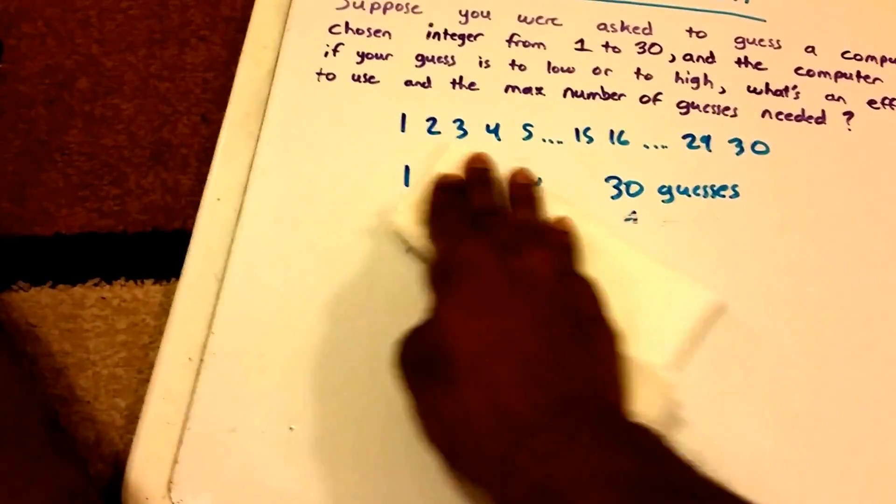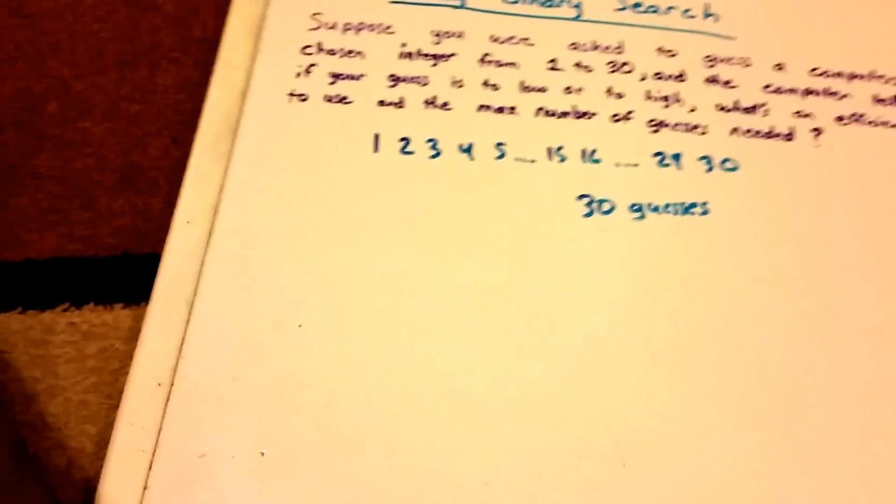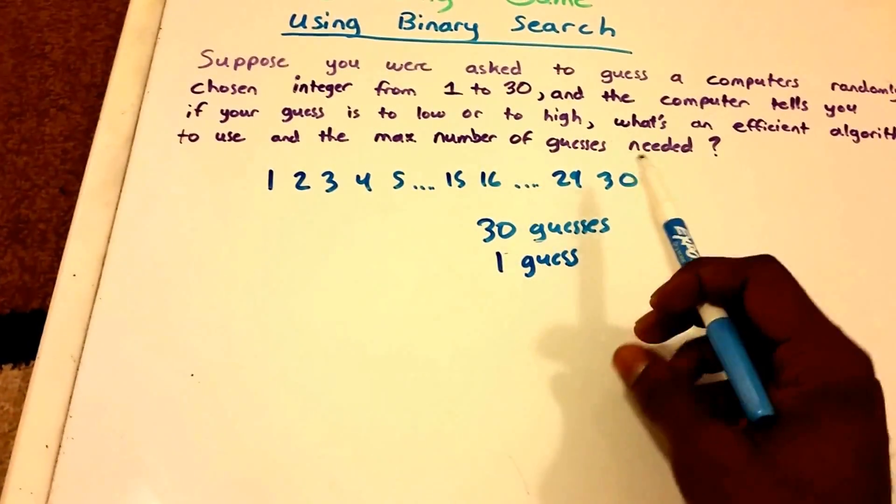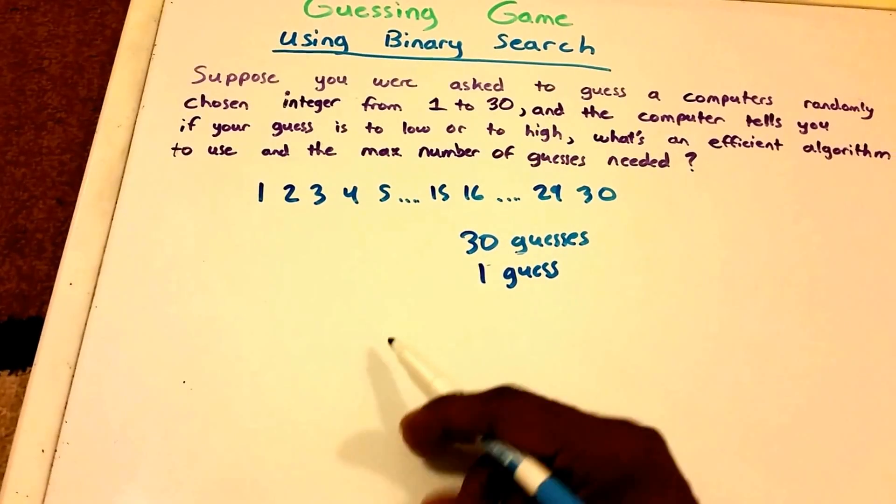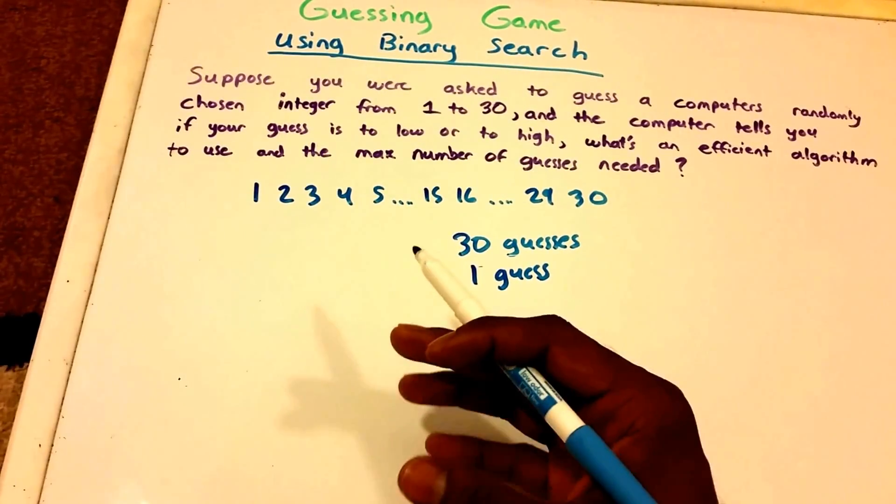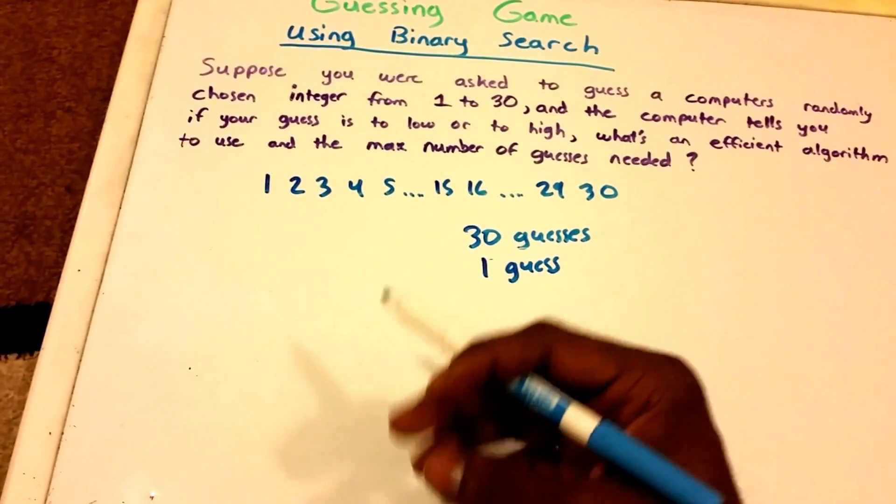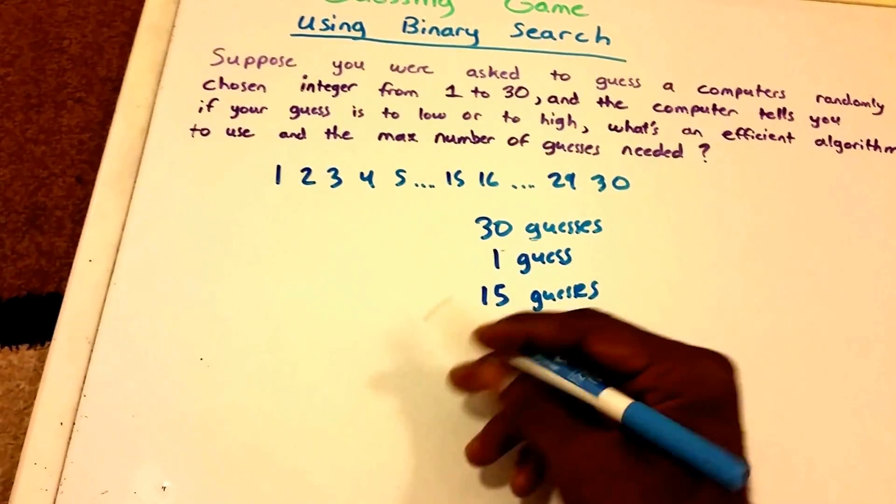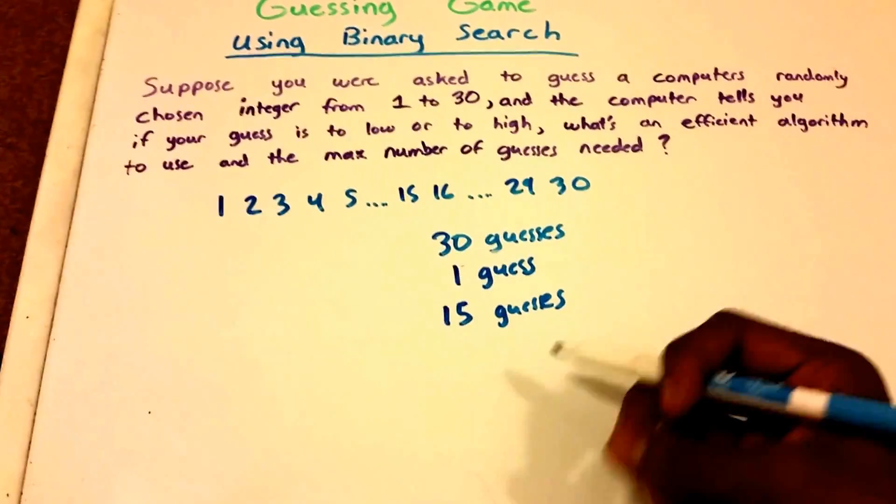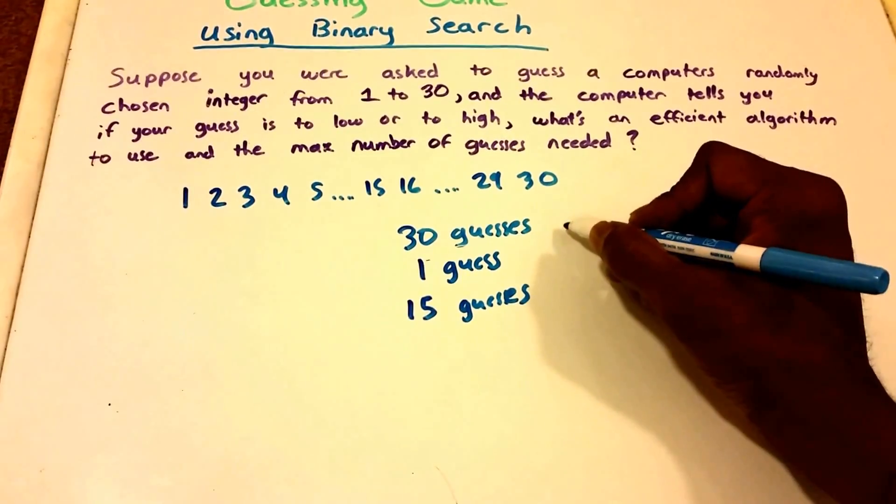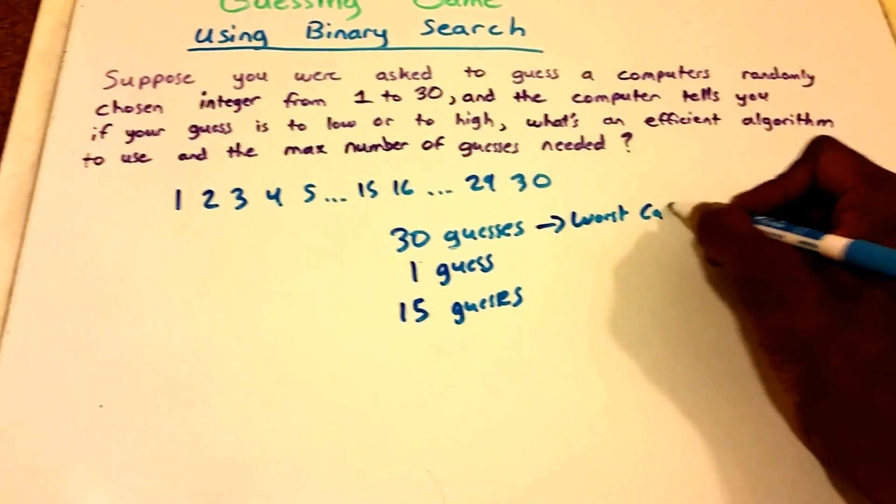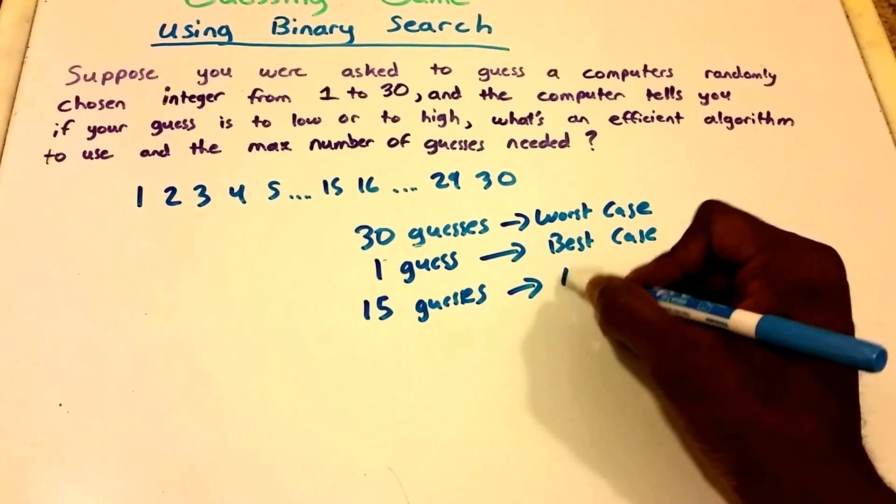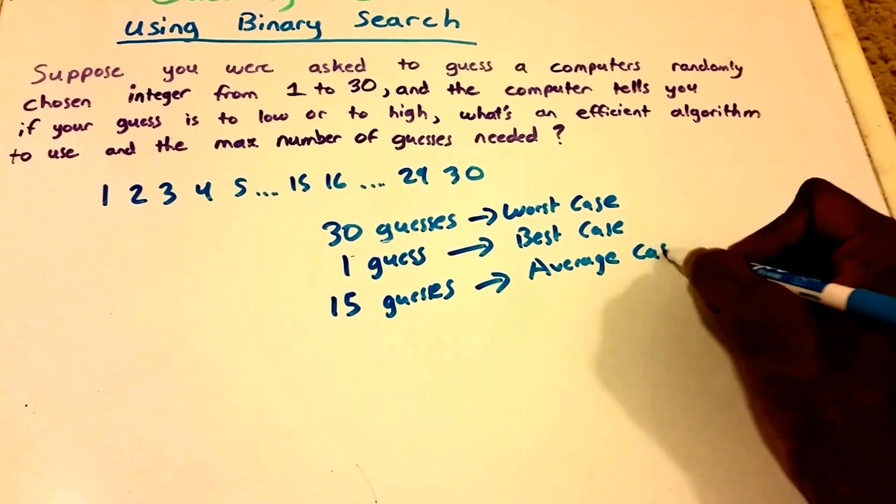But let's suppose that, oops, I did not mean to erase that. I'm going to put back our one guess here. But let's suppose that our computer did not choose either the first or the last number. So like on average, what's the chances of us, or what's the number of guesses that we're going to need on average? And it's probably 15, right? 15 guesses. 15 guesses would be the number of guesses. So let's take a look at this in big O notation. Worst case was right here, this is worst case. One guess was our best case. And 15 guesses was our average case.